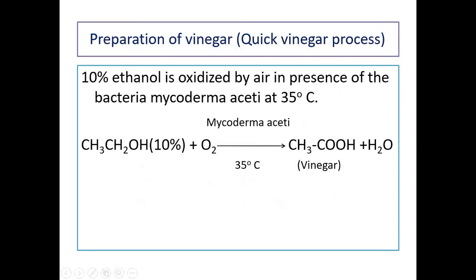This is the quick vinegar process. In this process, ethanol is oxidized in the presence of bacteria Mycoderma aceti at 35 degrees Celsius temperature, where ethanol is converted directly to vinegar.